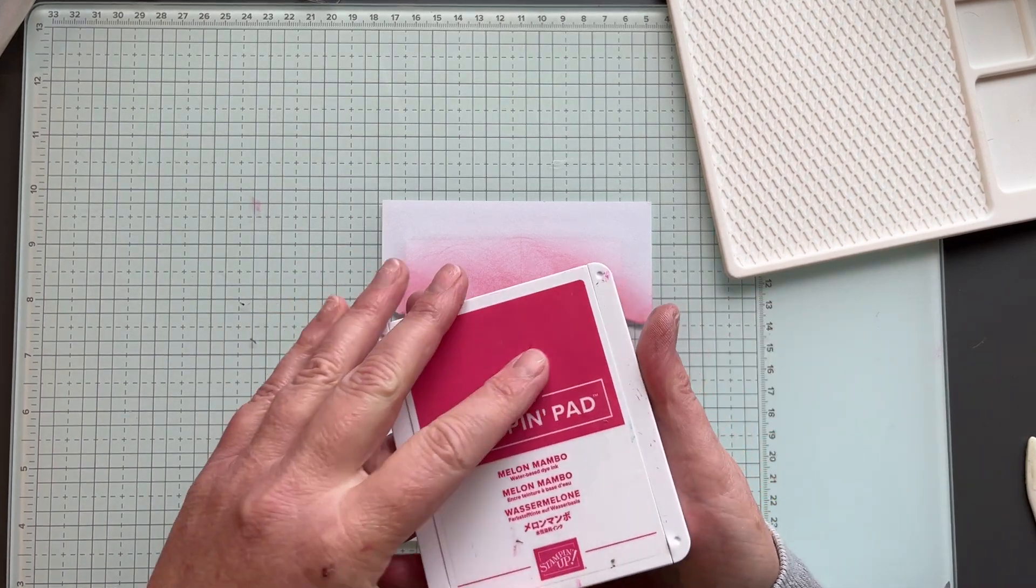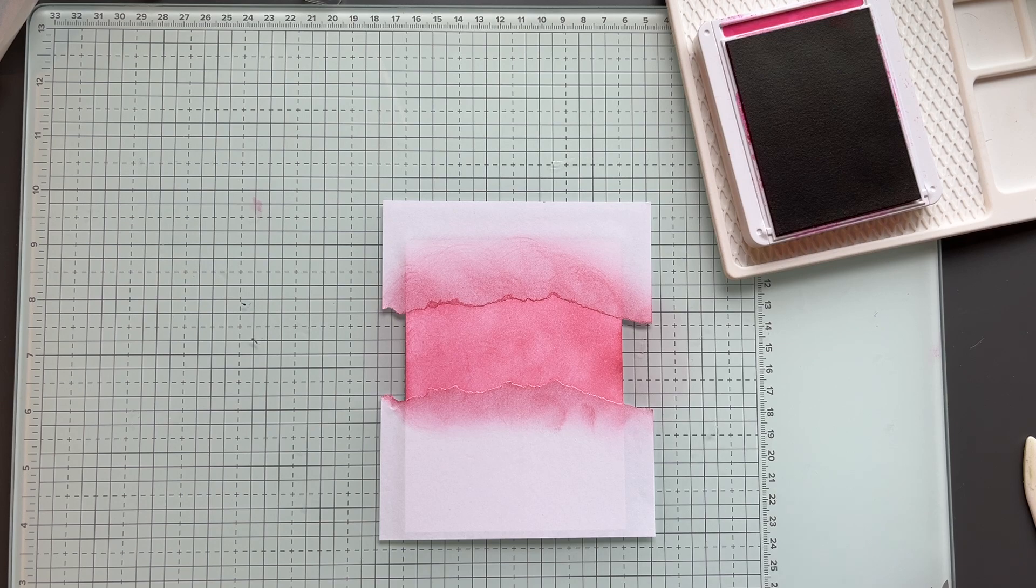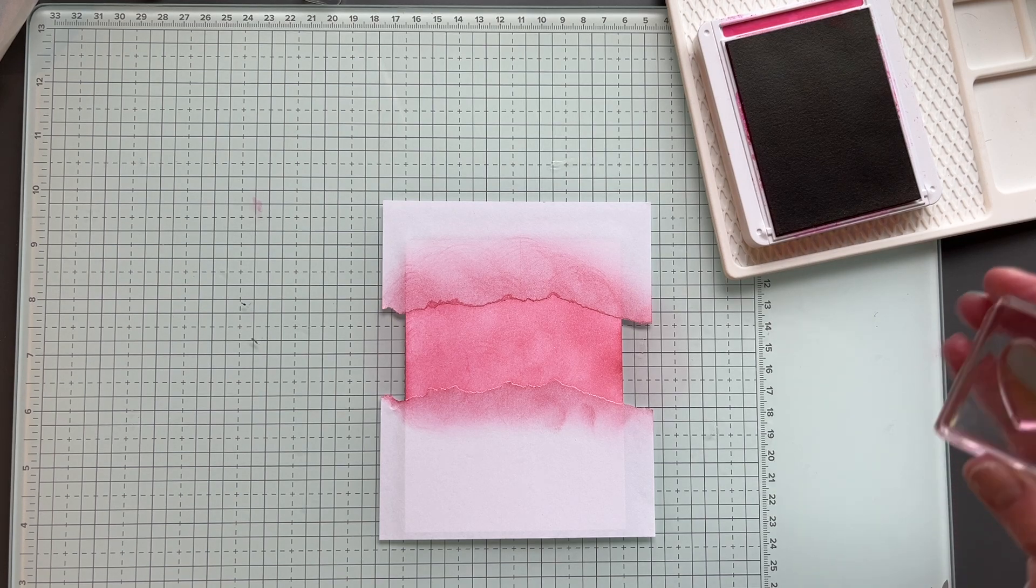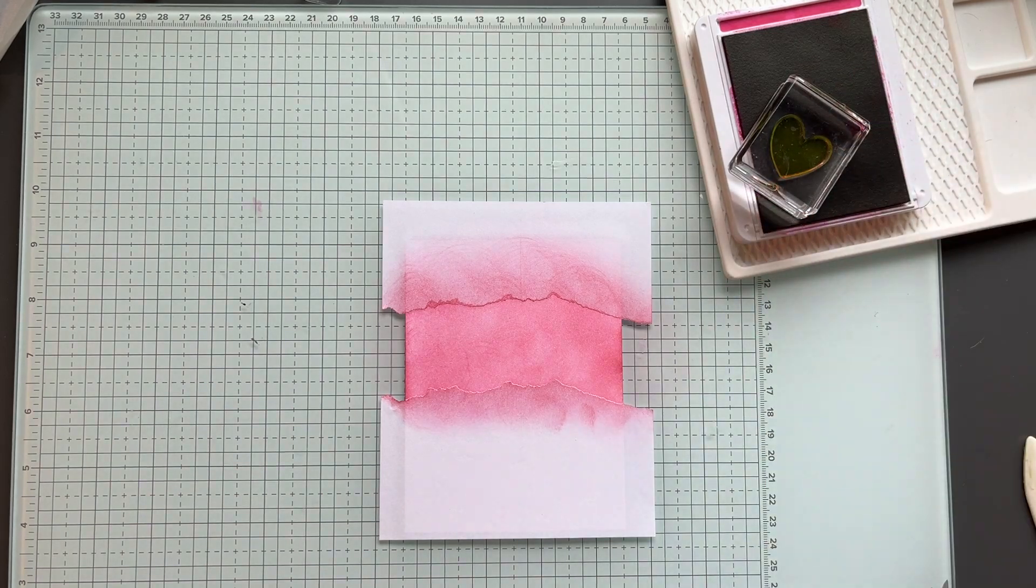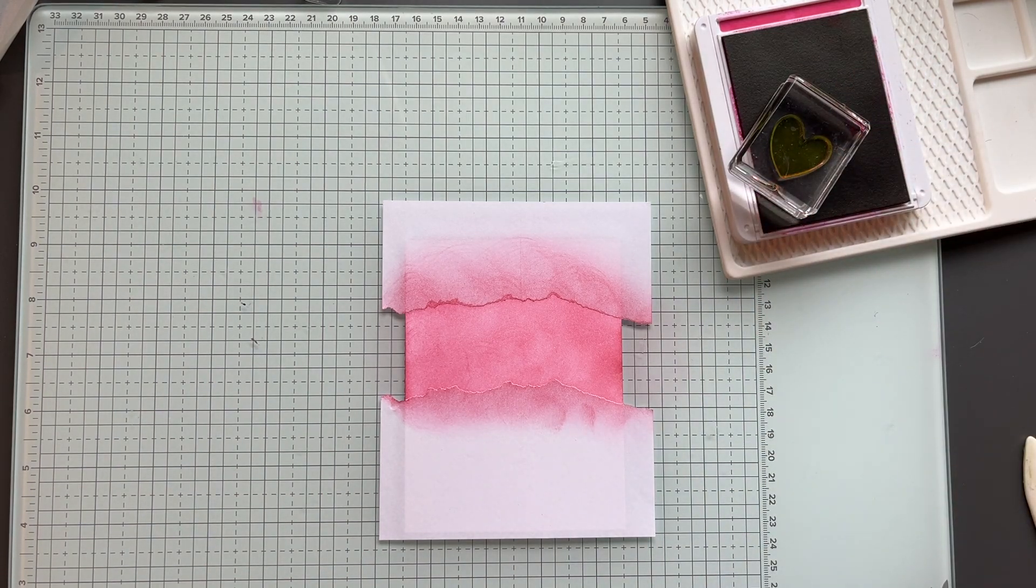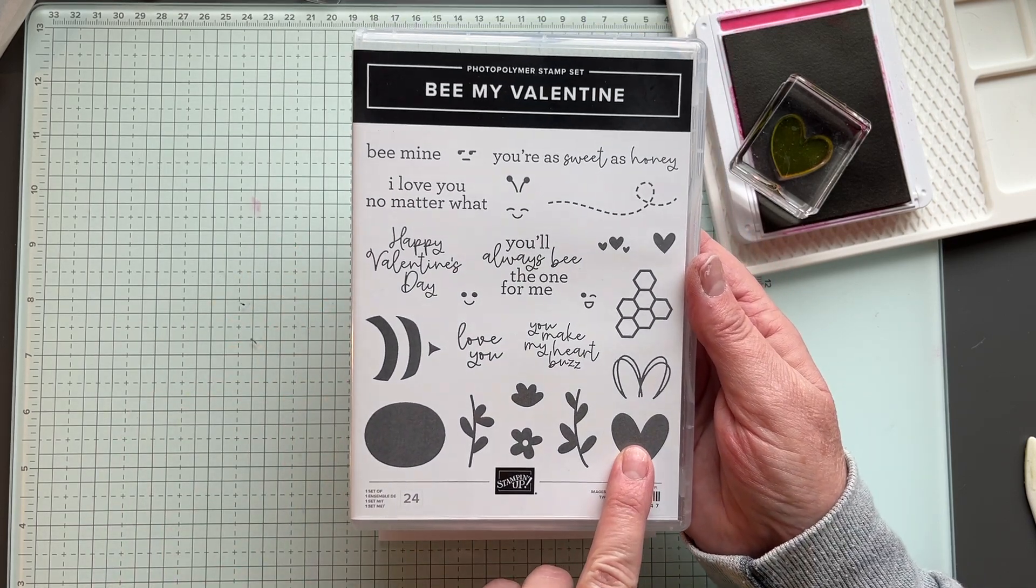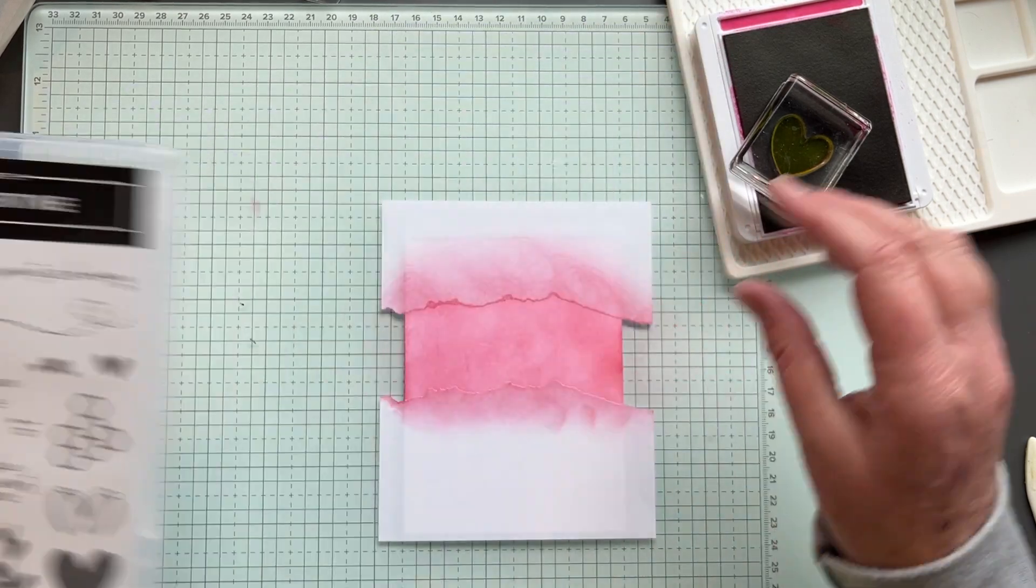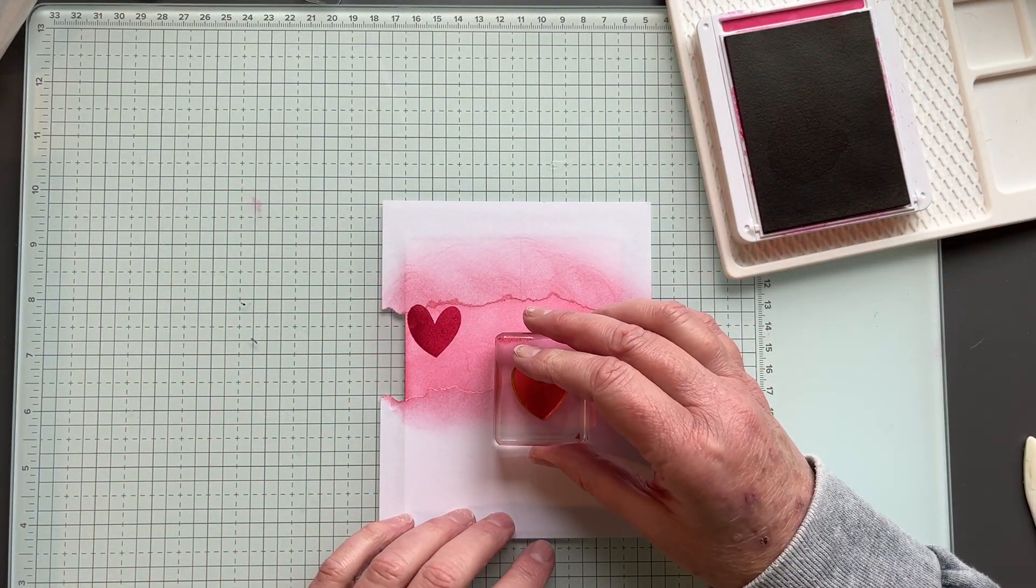And then I'm going to use melon mambo, just a darker pink. I did try this in different colors and I'll show you after. I'm going to stamp these hearts from the Be My Valentine set. So I'm using this heart, this heart, and these hearts, all in melon mambo. And I'm leaving the masking paper there.